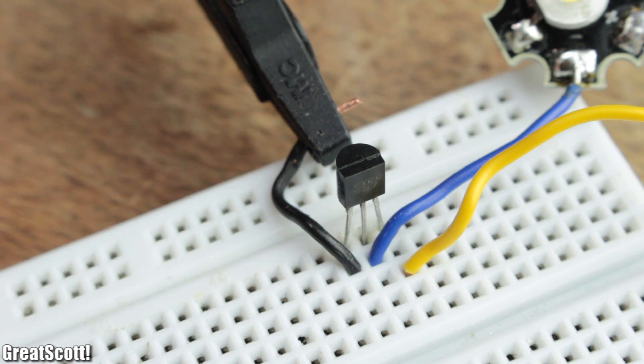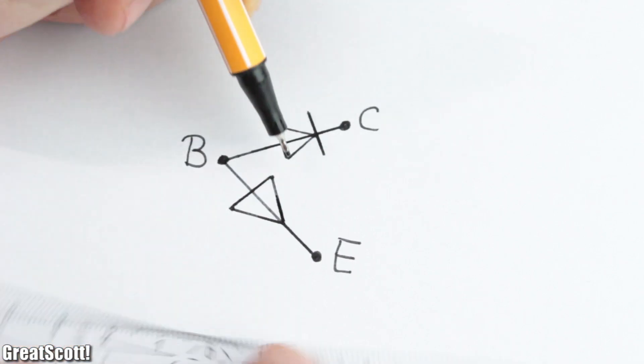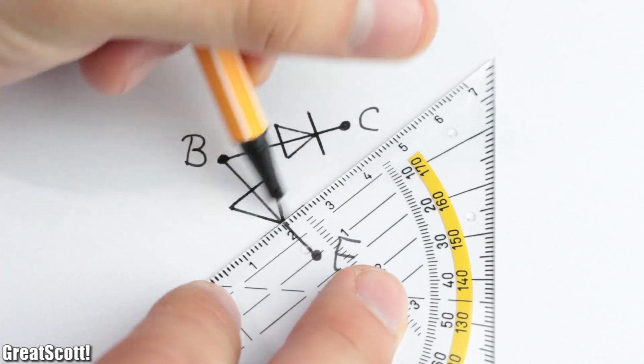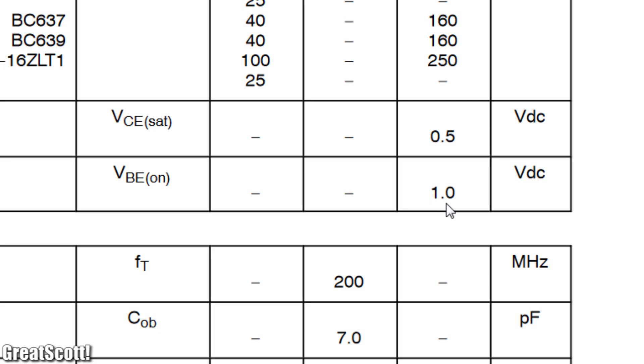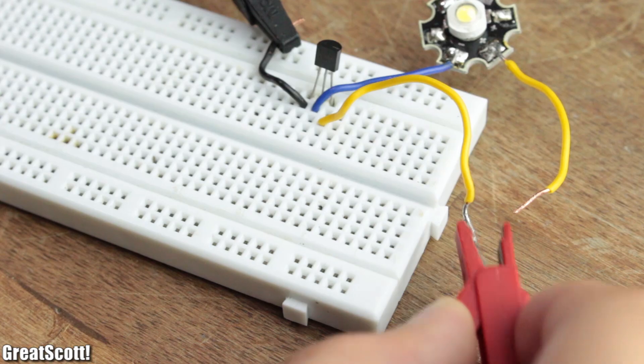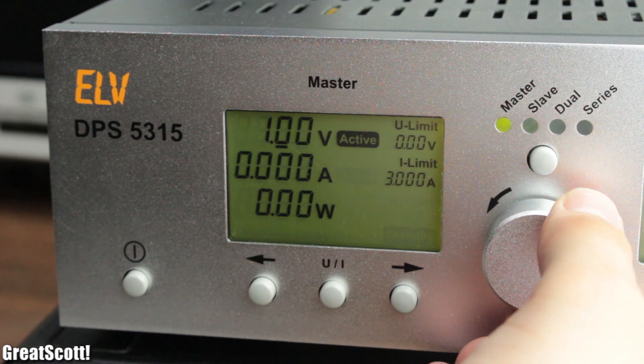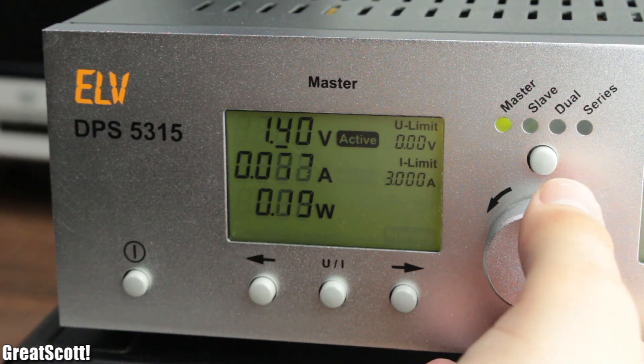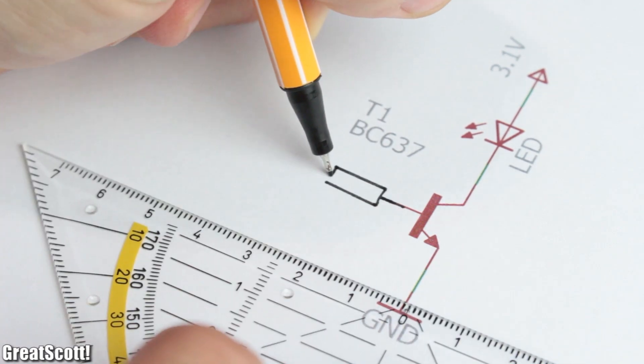So let's fix that by connecting the base straight to the supply voltage, which lets indeed a rather big base current flow but also destroys the transistor along the way. The reason for that is that the base-emitter path basically consists of a diode with a forward voltage of around 1 volt.